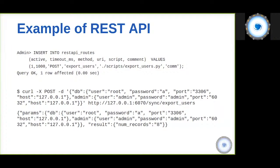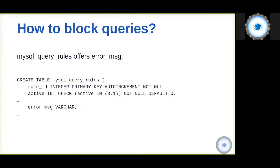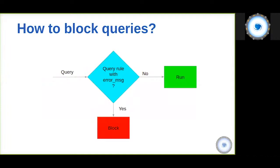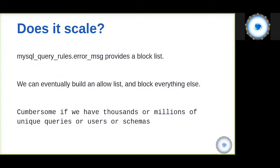Now, the firewall and whitelist. ProxySQL has always had a way of blocking queries using the error_message column in the MySQL query rules table. If that column is set, the query is rejected. You can use this as a deny list, or convert it into an allow list by specifying queries that are allowed and adding a catch-all rule at the end that blocks everything else — though this becomes complicated with many rules.